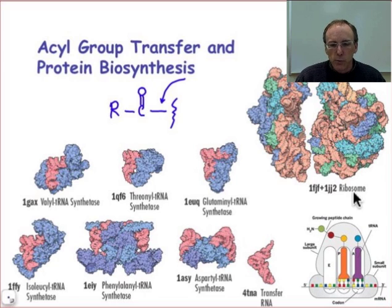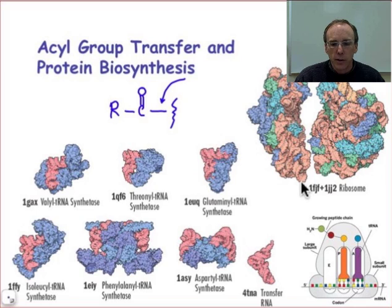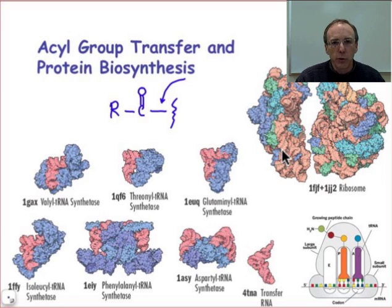There's the ribosome, which is largely ribosomal RNA. You can see the RNA shown in this tan color. And if you look closely, you can see the helical structures that we typically associate with nucleic acids. In green and blue, that's where the proteins are.